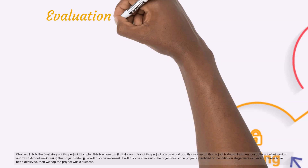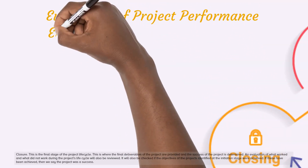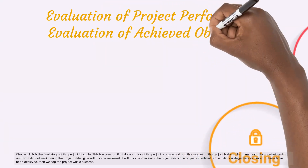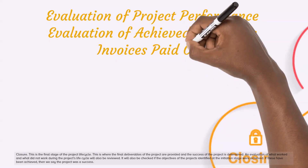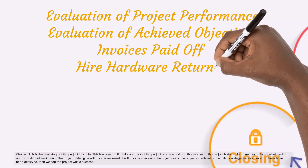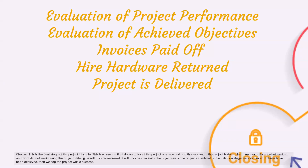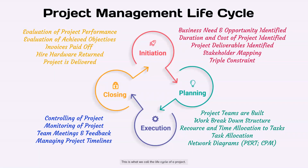Closure. This is the final stage of the project lifecycle. This is where the final deliverables of the project are provided and the success of the project is determined. An evaluation of what worked and what did not work during the project's lifecycle will also be reviewed. It will also be checked if the objectives identified at the initiation stage were achieved. If these have been achieved, then we say the project was a success.